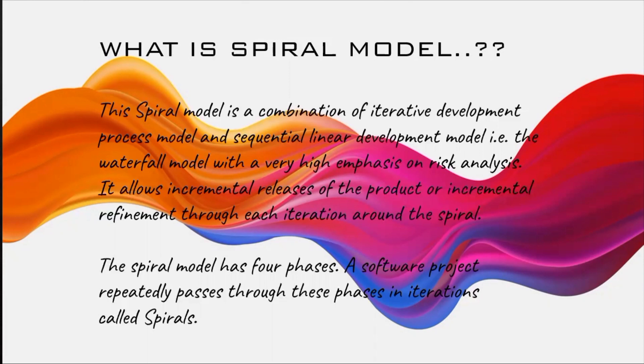Assume you were handed a project to complete. If you apply the spiral model, you break down the project into four parts: part one, part two, part three, and part four. You take every part individually. For part one, you complete all the phases of the spiral model, then jump to part two, then part three, then part four — continuing until all parts of the project are completely processed.